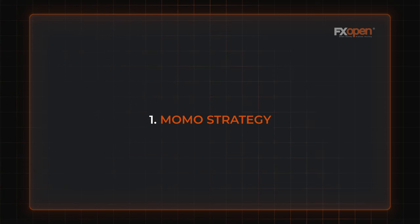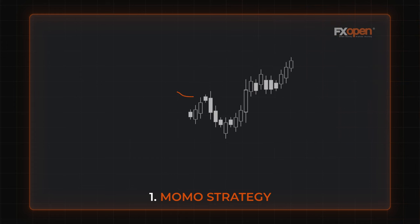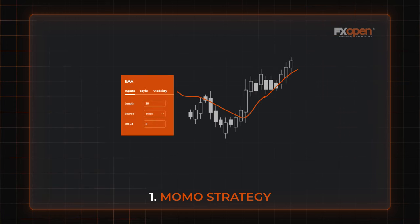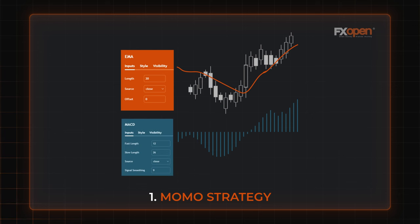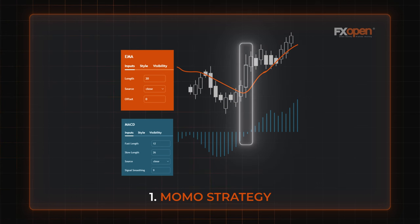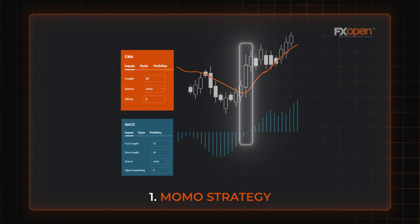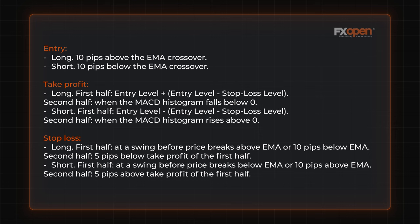Momo strategy. Momo is a momentum reversal strategy. It's based on signals of a 20-period EMA (exponential moving average) and an MACD (moving average convergence divergence) indicator with standard settings: fast EMA with a period of 12, slow EMA with a period of 26, and a signal line with a period of nine, all applied to close prices. A buying opportunity occurs when the price breaks above the EMA while the MACD indicator is either above the zero line for the last 25 minutes or is crossing the zero line from bottom to top.